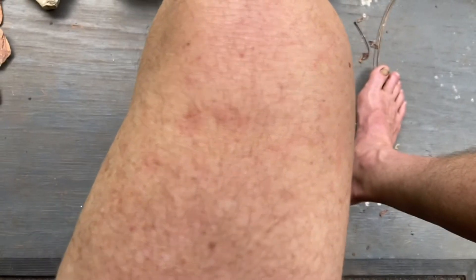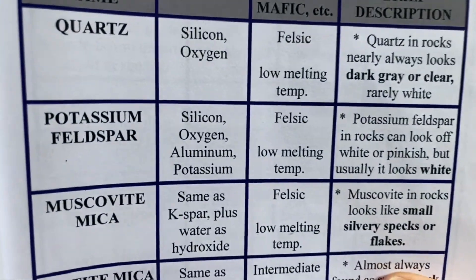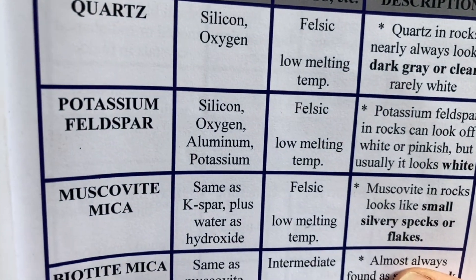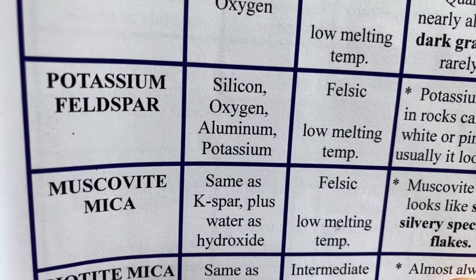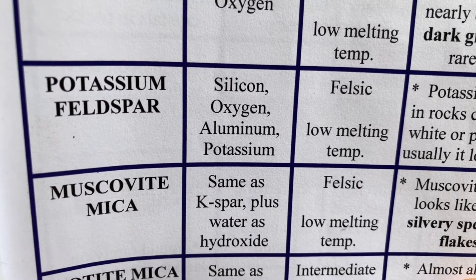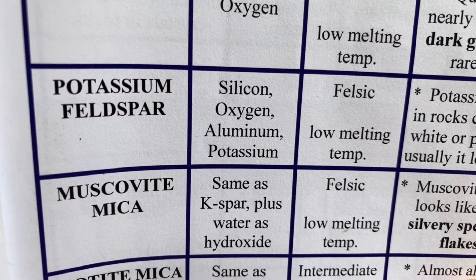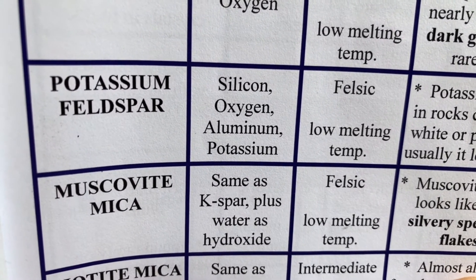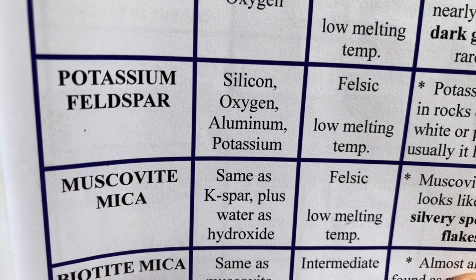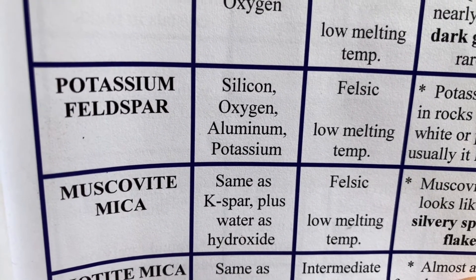So what does potassium feldspar have in it? What are the elements? Potassium feldspar has silicon, oxygen, aluminum, and potassium. Silicon plus oxygen is what? Right — quartz. So quartz plus aluminum and potassium gives you potassium feldspar.